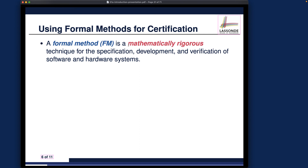So what is a formal method? A formal method is a mathematically rigorous technique — so math is heavily involved. If you're good in math, especially from EECS 1090, you will definitely enjoy applying that math to building reliable system models. More precisely, it is a mathematically rigorous technique for the specification, development, and verification of software and hardware systems. In this course we focus on specification of models and verification — proving properties of your model — rather than coding in Java or Python.